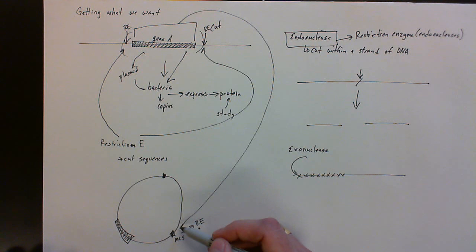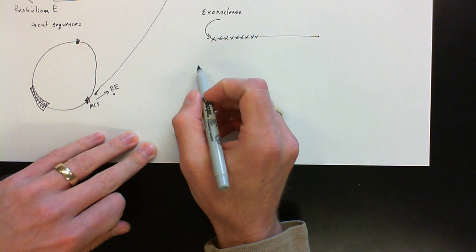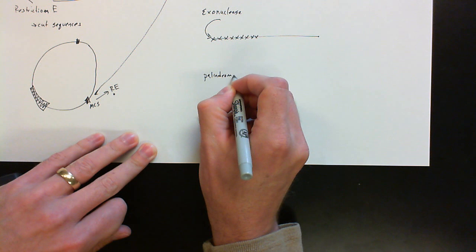So the question is we need to learn a little bit more about endonucleases. Let's learn a little bit more about restriction endonucleases. What's kind of unique about them is they cut out what we call palindromic sequences. What that means, if you remember, it can be read both directions.